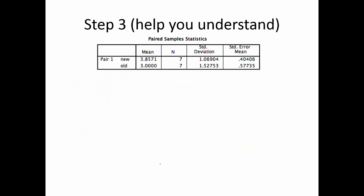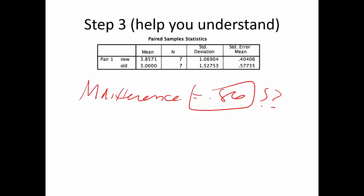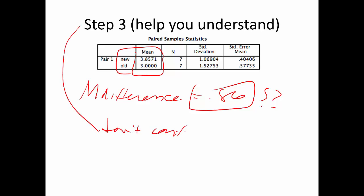If you don't understand what a mean difference of 0.86 means, look at the group means: the new score is 3.86 and the old score is 3.0. Be careful not to use the group statistics box for dependent T — it looks similar to independent T output, implies 14 people when really N is seven with each person tested twice. I tell students to ignore that box to avoid confusion; just use the means there to figure out which condition is bigger.